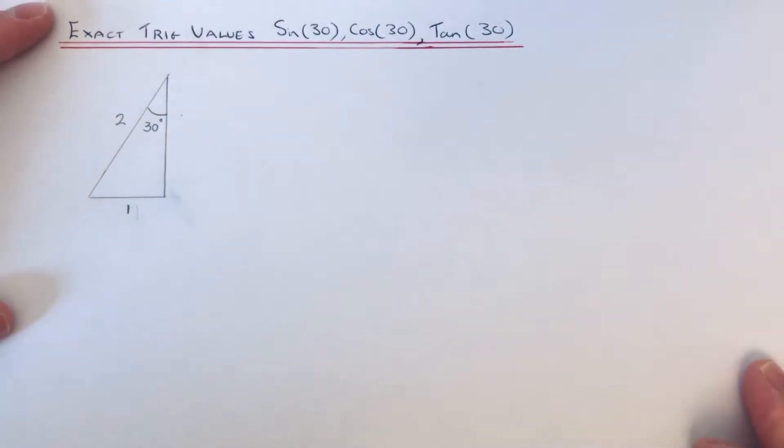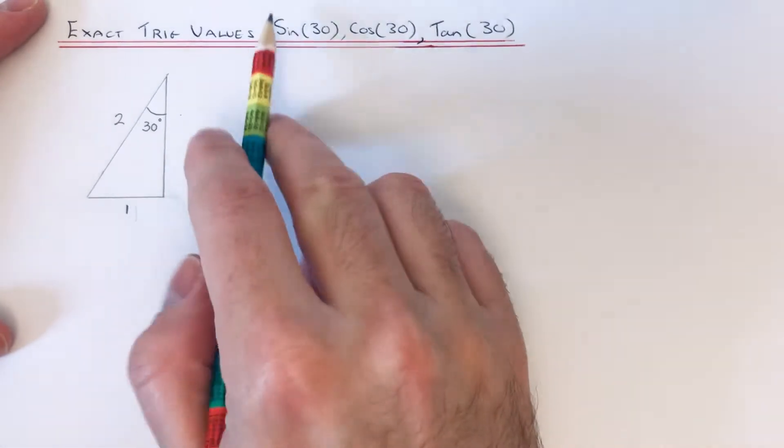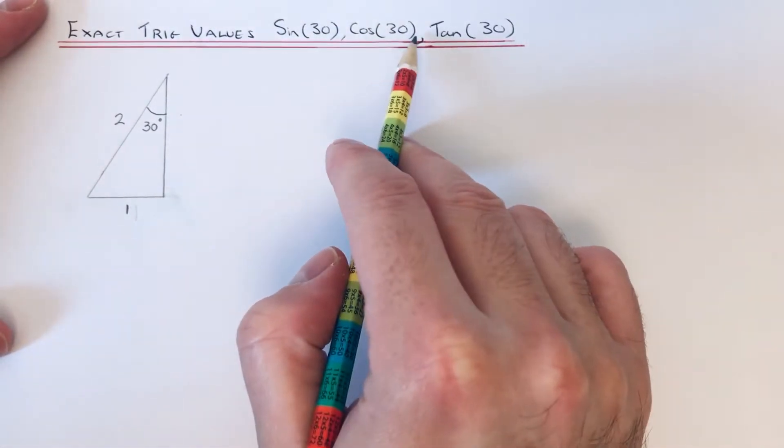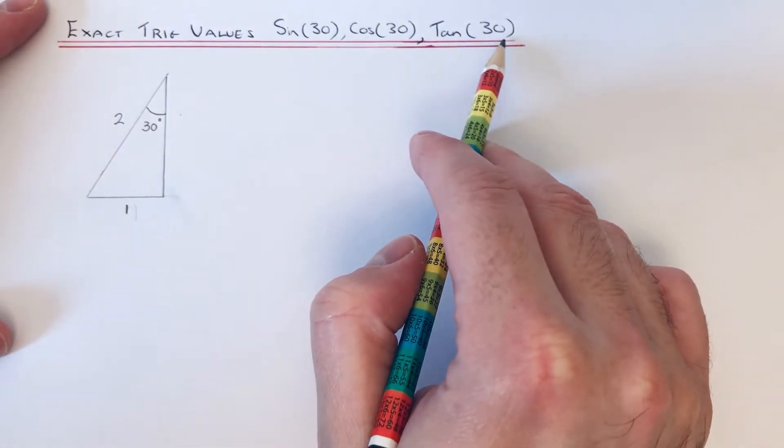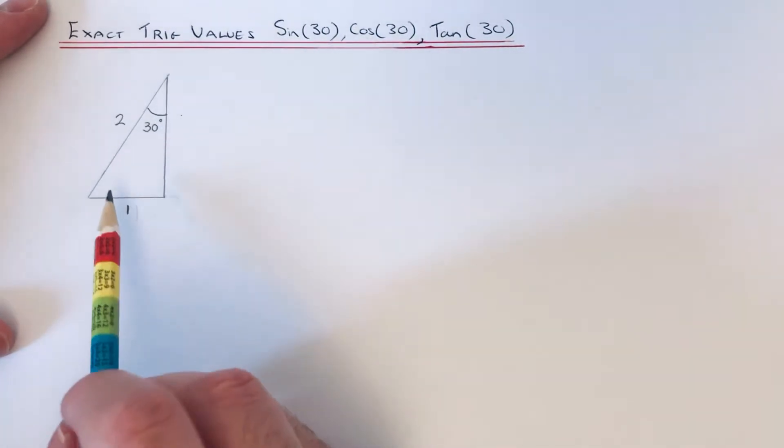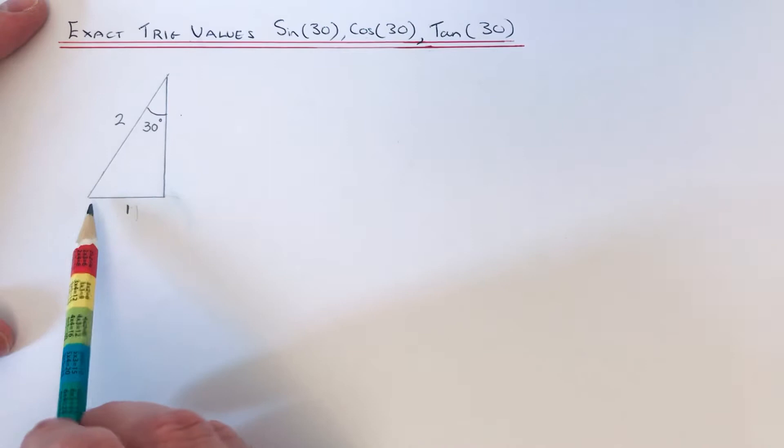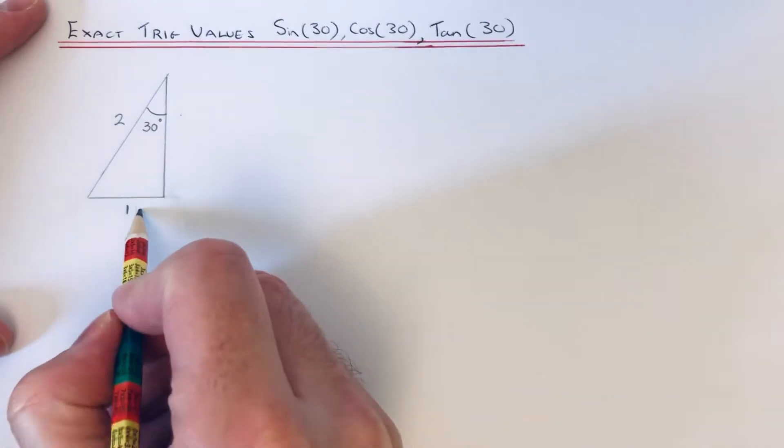Hi guys, welcome back. Today I'm going to show you a way of remembering the values of sin(30°), cos(30°), and tan(30°). So to do this you'll need to start off with a right angle triangle with a base length of one unit and a hypotenuse of two units.